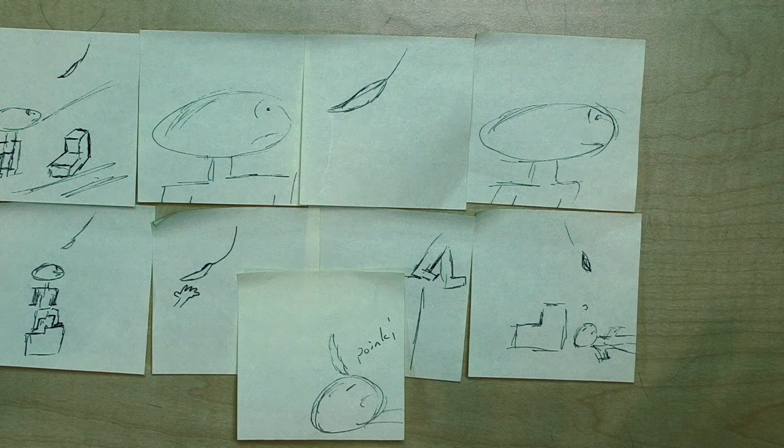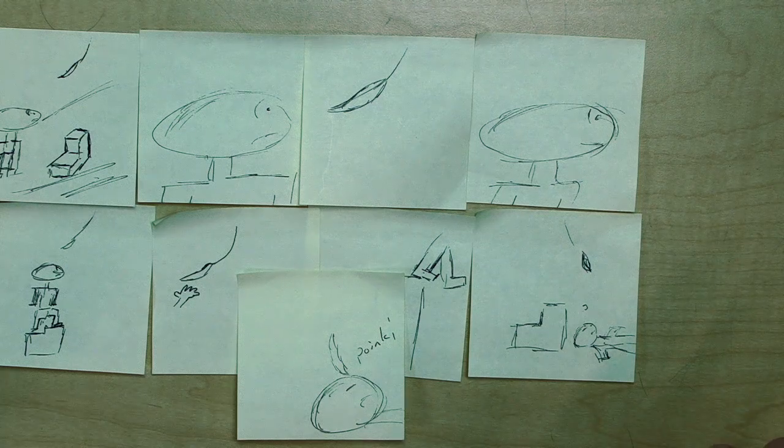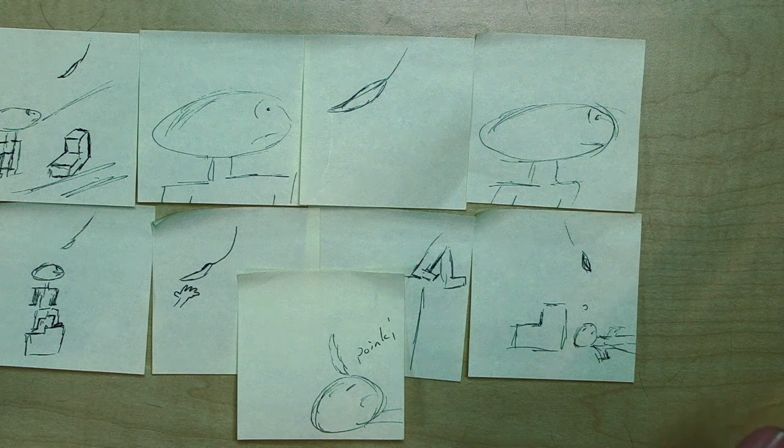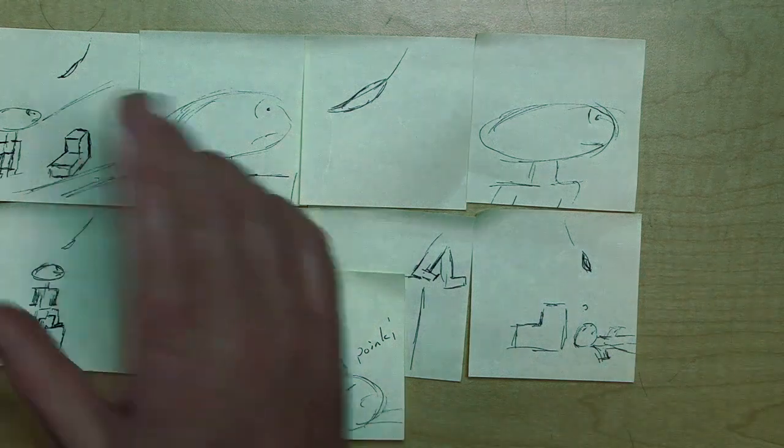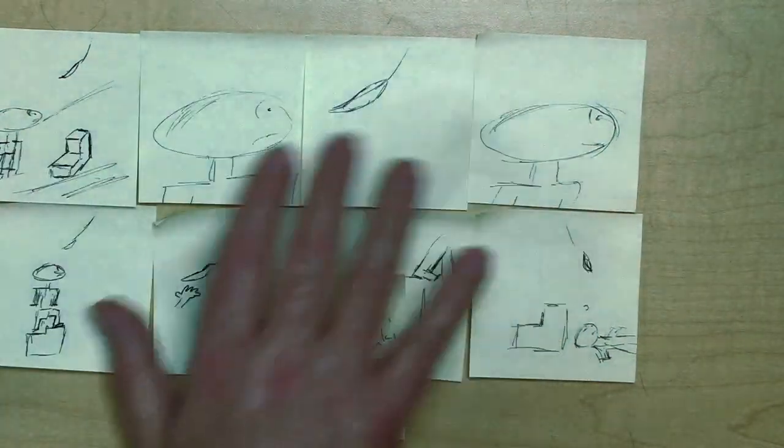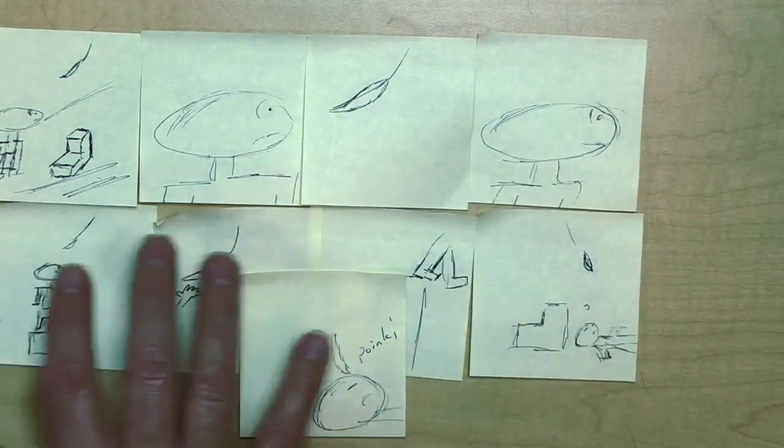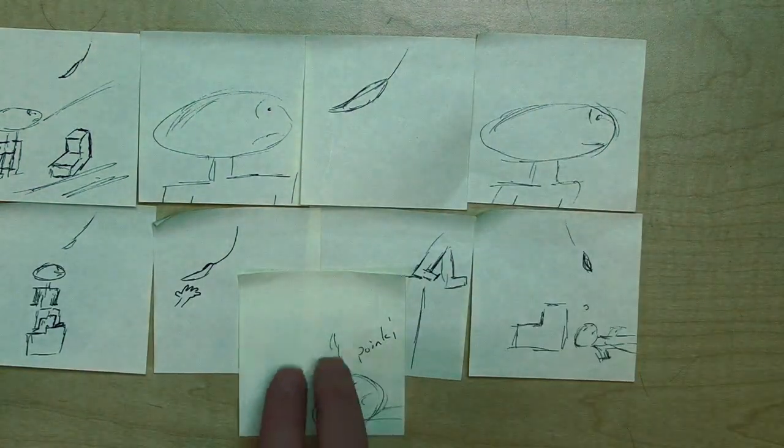So the important thing here in the storyboard is you want to connect all the dots. You want to give the audience what they're looking for and you want to lead them towards something. And so we're using a variety of different shots here to set up a story, set up some tension and then have a conclusion right here.